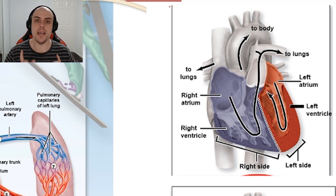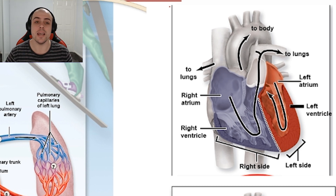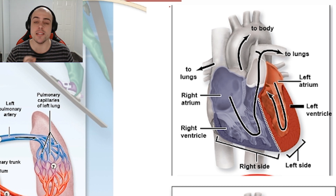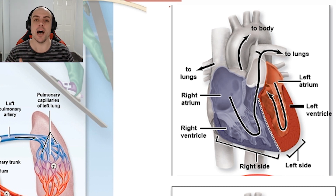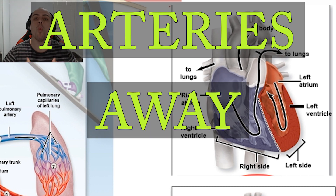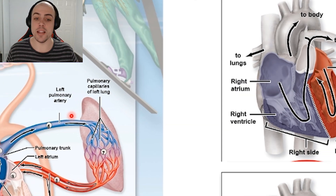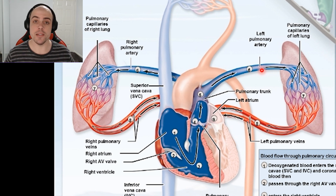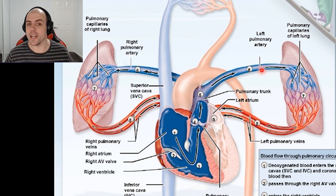Now there's a key thing here. A lot of people tend to make the critical mistake of thinking that arteries carry oxygenated blood. Mostly yes, but there are definitely some exceptions. A much better way of thinking about it is that arteries take blood away from the heart, because this is one of those exceptions — we have our pulmonary arteries, but the blood is deoxygenated. It hasn't reached the lungs yet.